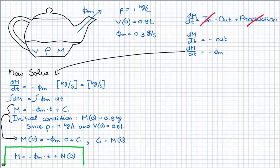And this is the mass of the water is minus the outflow of mass times the time plus the mass at time t=0. So the question was, at what time is the brass kettle empty?